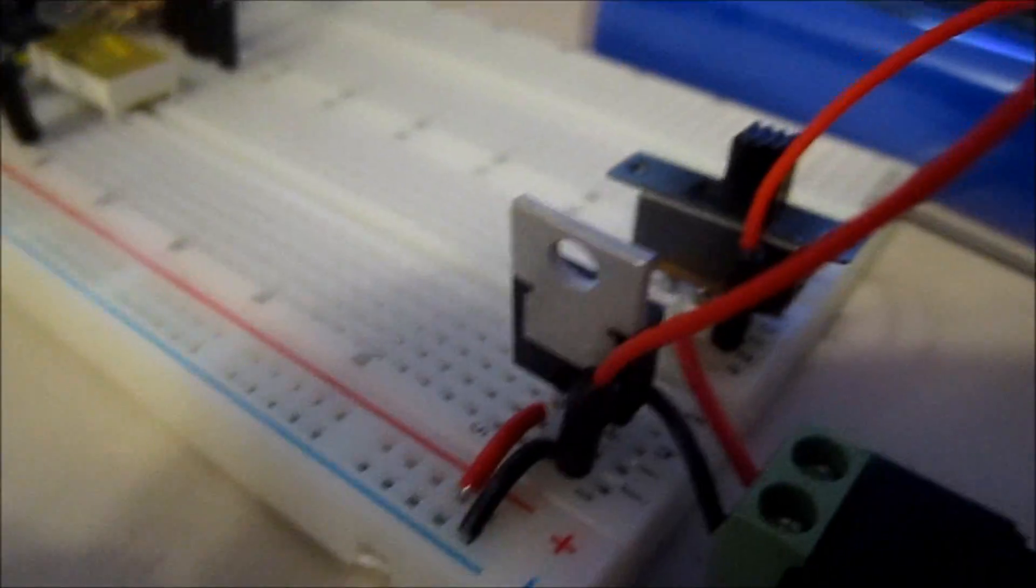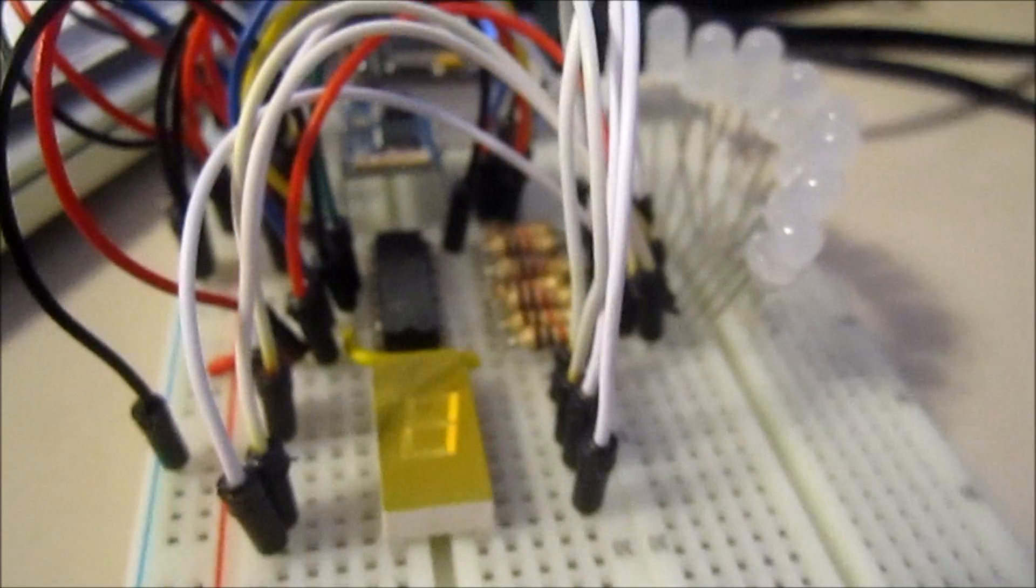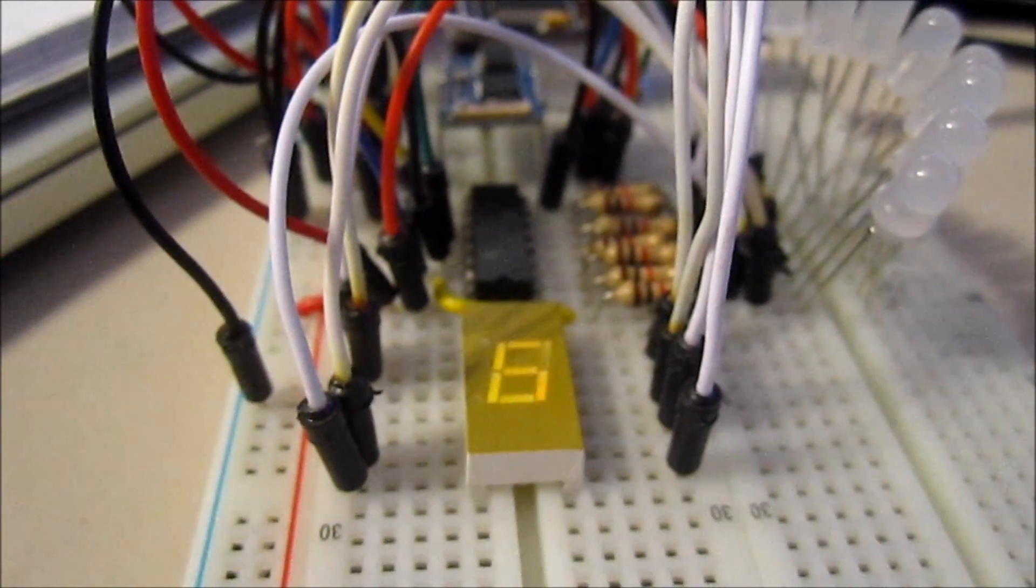That's a voltage regulator to bring it down to 3.3 volts, and there's the LED seven segment display and one dollar shift register.